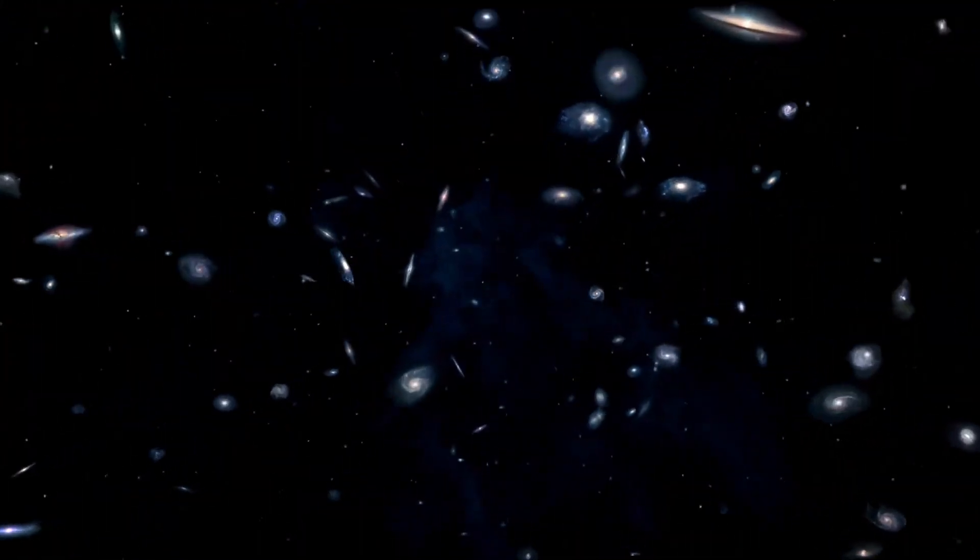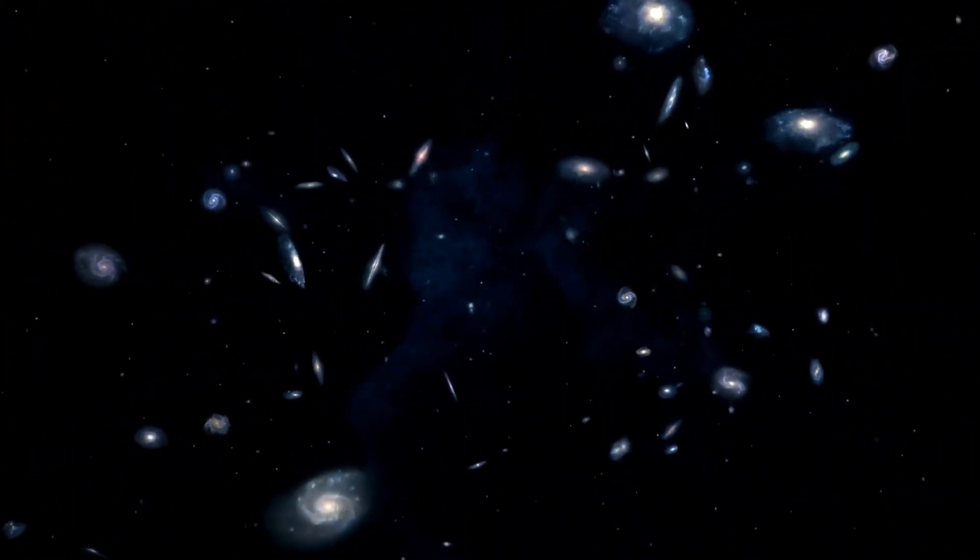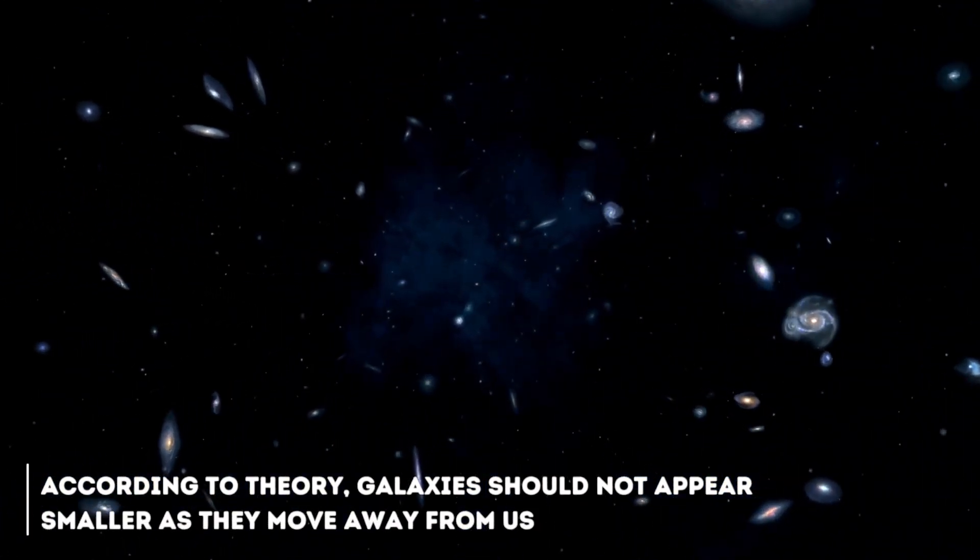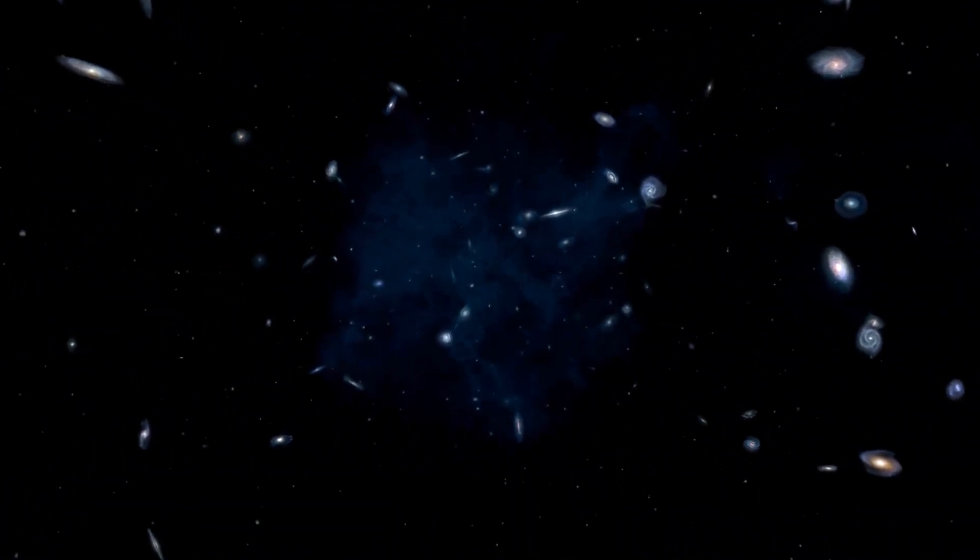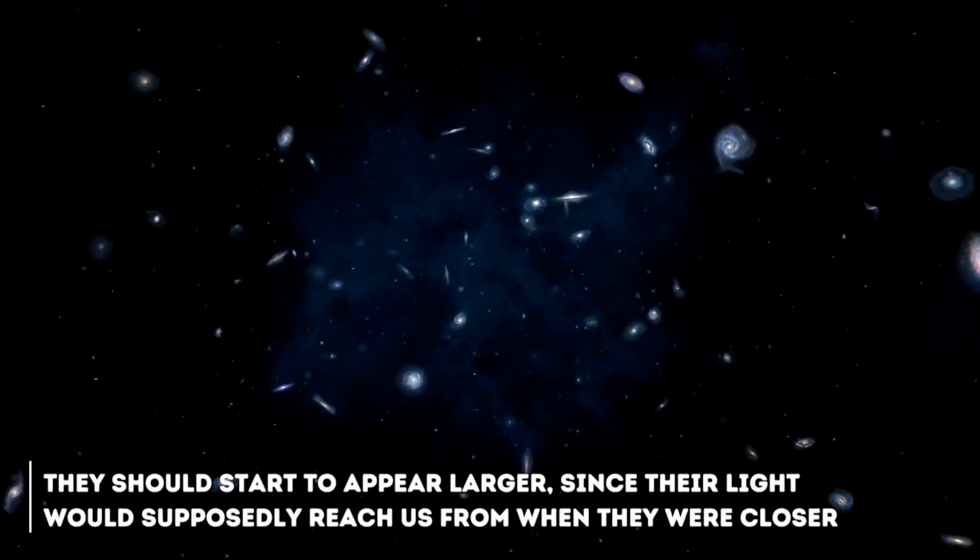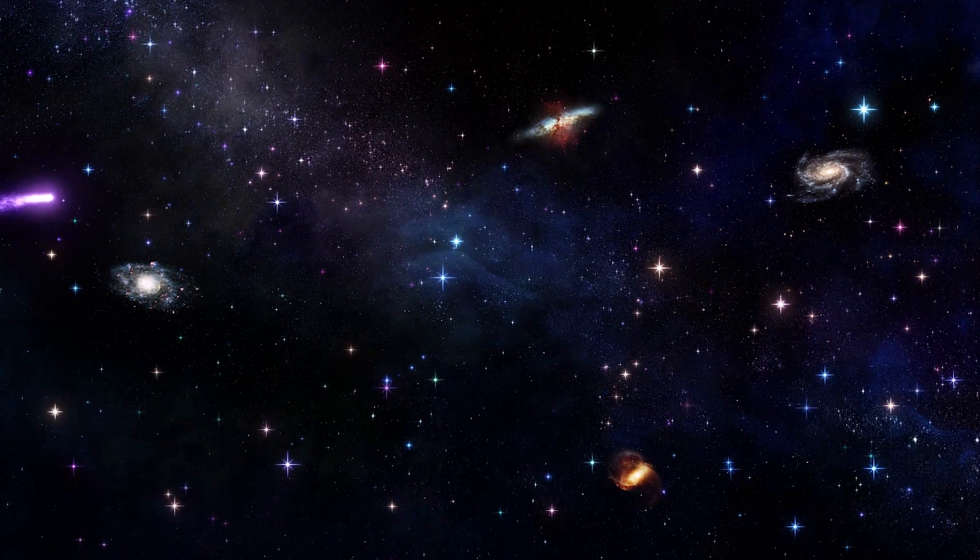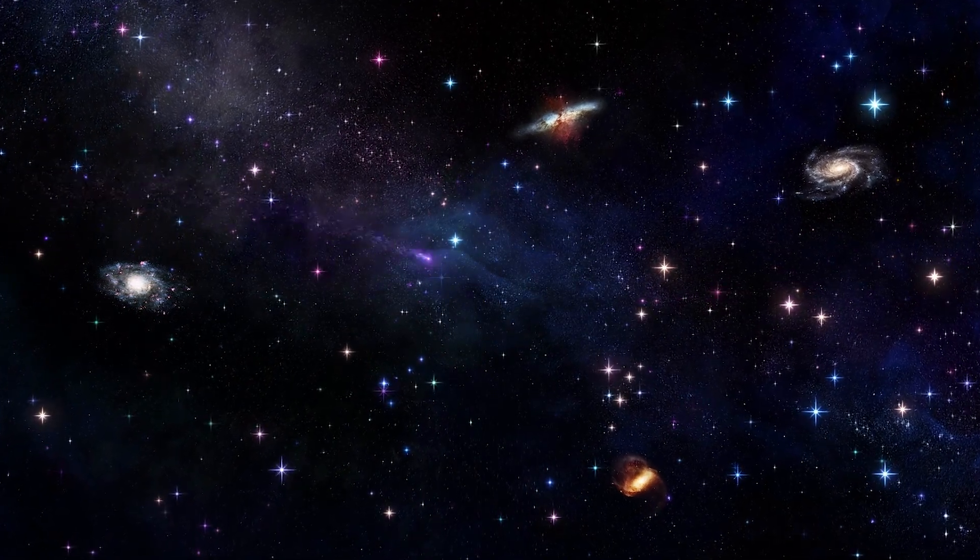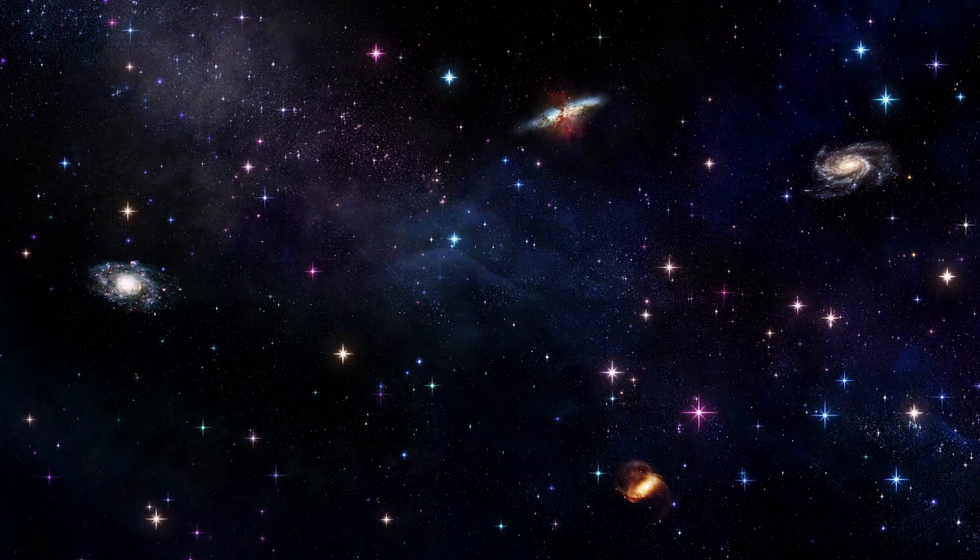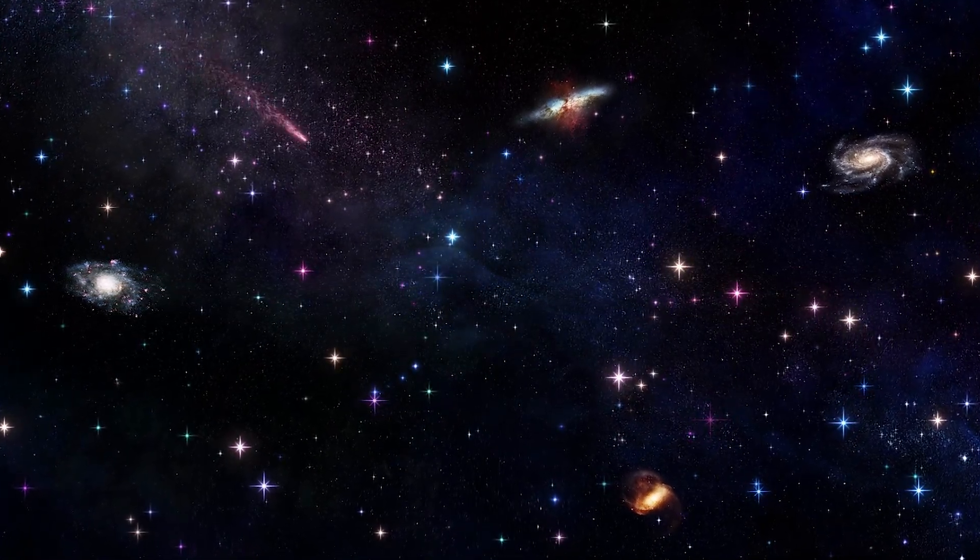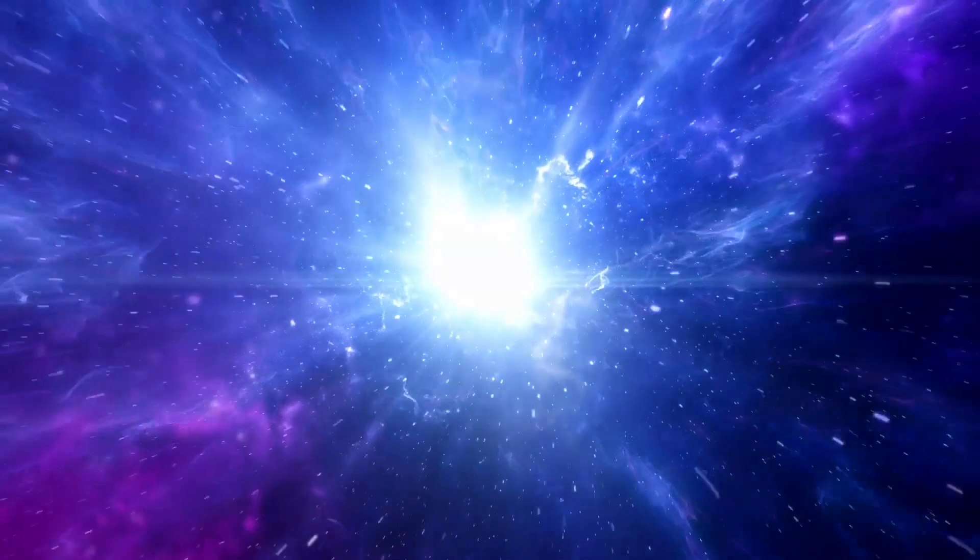Let's try to simplify the puzzle of these discrepancies. Let us imagine that the universe is an expanding balloon. According to the theory, galaxies should not appear smaller as they move away from us. At a certain point, they should start to appear larger, since their light would supposedly reach us from when they were closer. This strange but essential twist on the concept of an expanding universe is seen in the James Webb's images, where galaxies appear to be the same size as those close to us. The theory may be actually quite wrong about several things, surprisingly enough.